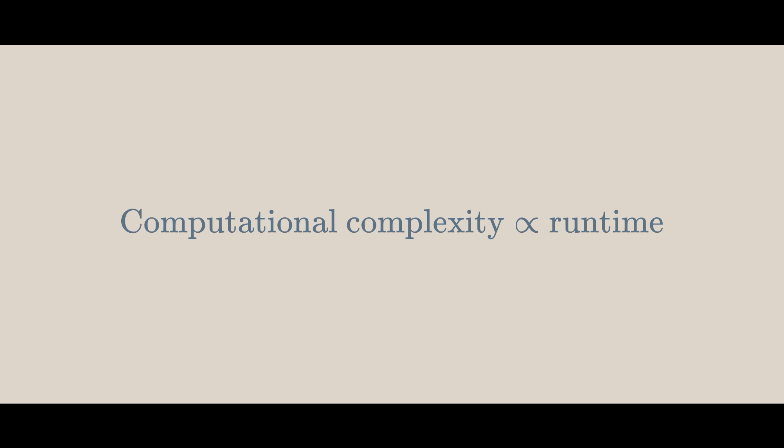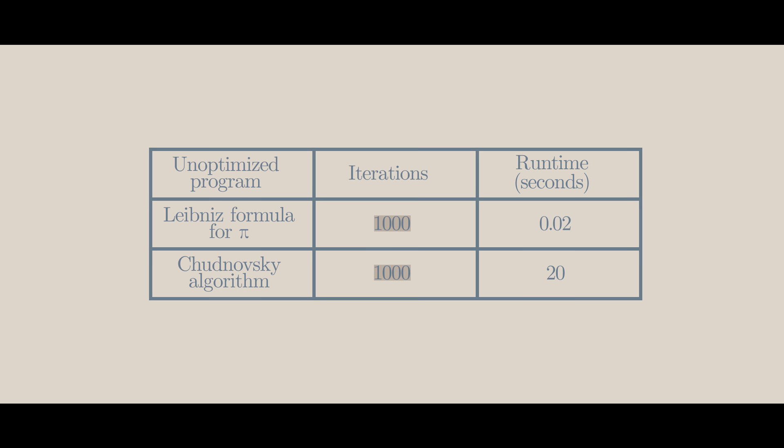The computational complexity also determines the speed at which it can be calculated. I calculated the first 1000 iterations of the Leibniz formula for pi and the Chudnovsky algorithm. The Leibniz formula finished in 0.02 seconds and the Chudnovsky algorithm finished in 20 seconds. This makes sense because the Chudnovsky algorithm has harder computations.